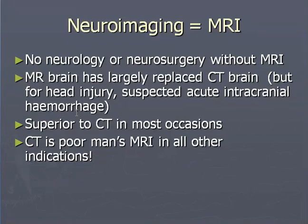Now neuroimaging — we already discussed in the previous section that MRI is the study of choice in various neurological diseases. No neurology or neurosurgery without MRI. MR brain has largely replaced CT brain, but for head injury and suspected acute intracranial hemorrhage, CT is still the study of choice. MR is superior to CT in most occasions.